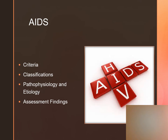Assessment findings include acute retroviral syndrome, which might be mistaken for the flu. Clients may also experience fever, swollen and tender lymph nodes, pharyngitis, a rash, muscle and joint pain, liver and spleen enlargement, weight loss, Kaposi sarcoma (a type of connective tissue cancer), pneumocystis pneumonia, and an abnormal PAP test or pelvic inflammatory disease.